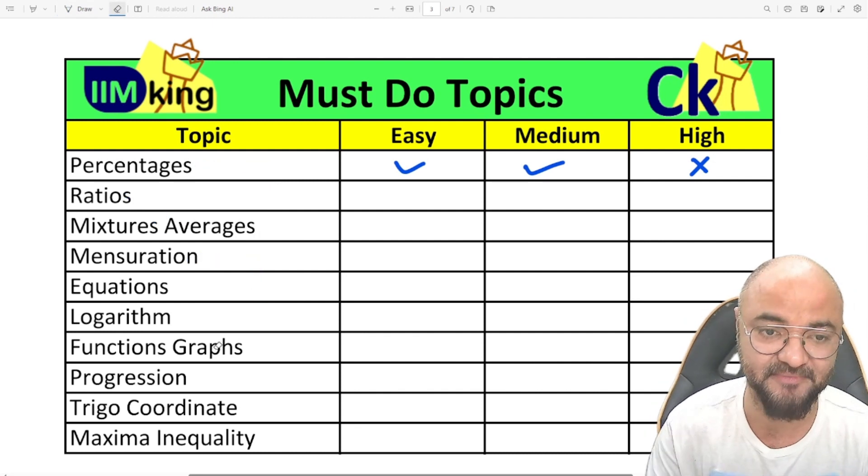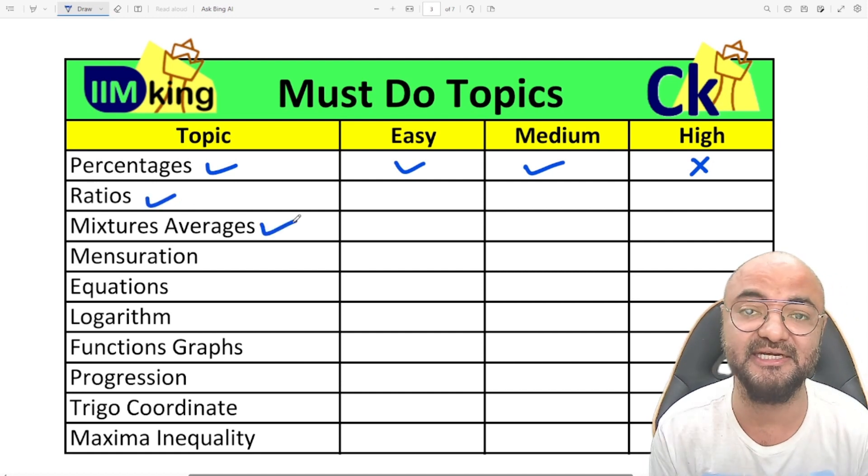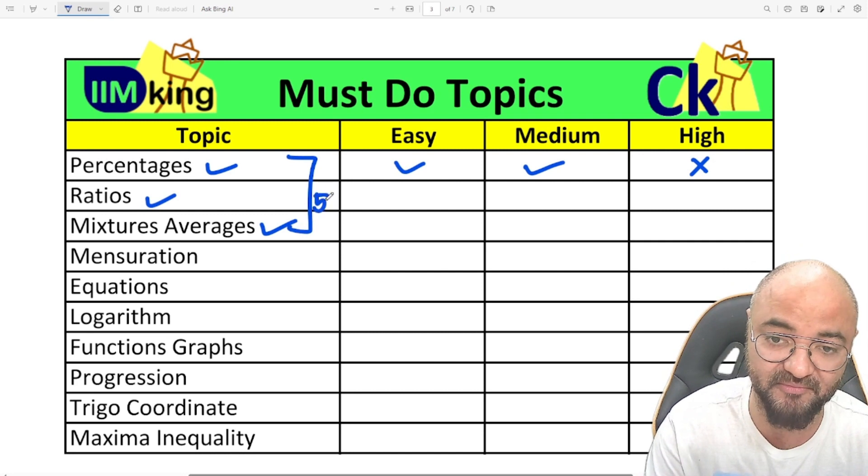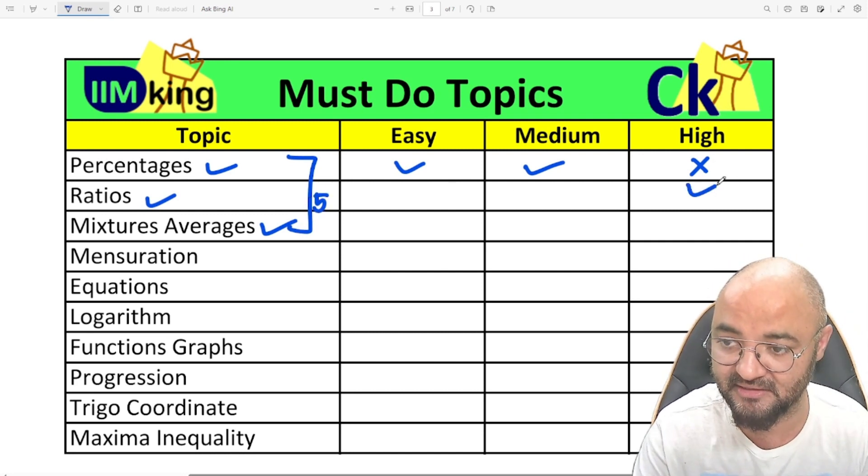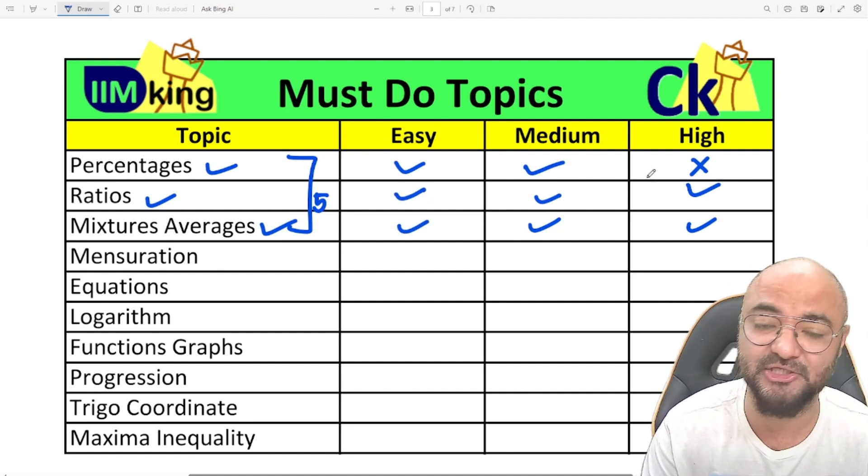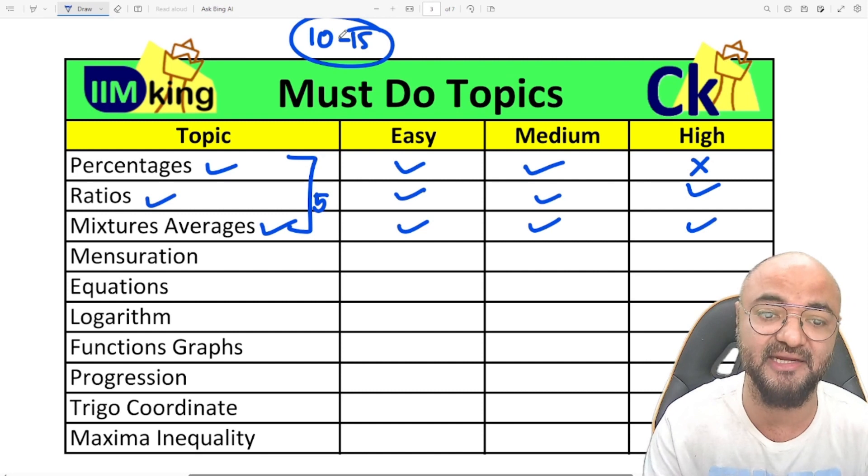In arithmetic, there are three topics: percentages, ratios, and mixture averages. These three topics—every year you'll find three to five questions coming from this. If I can become a god in these topics, suppose I do high level also, I can assure myself that I can get around 10 to 15 marks. I can clear the cutoff only by doing these three topics.